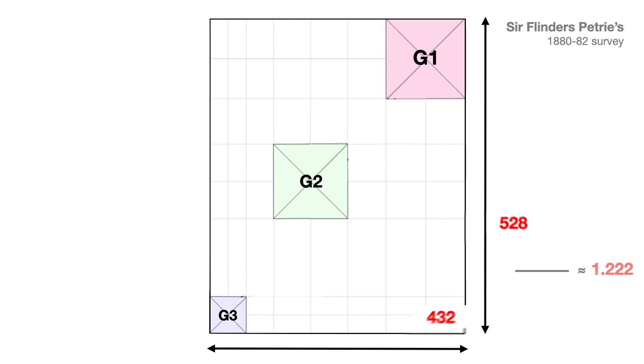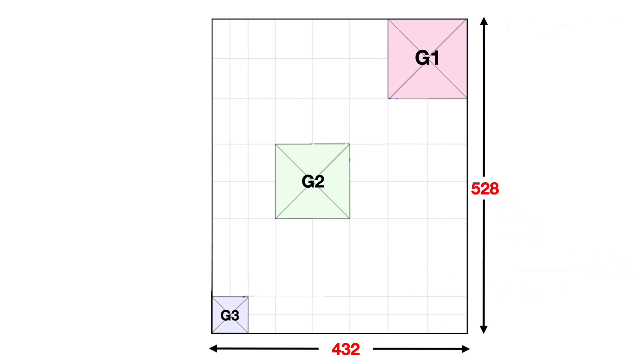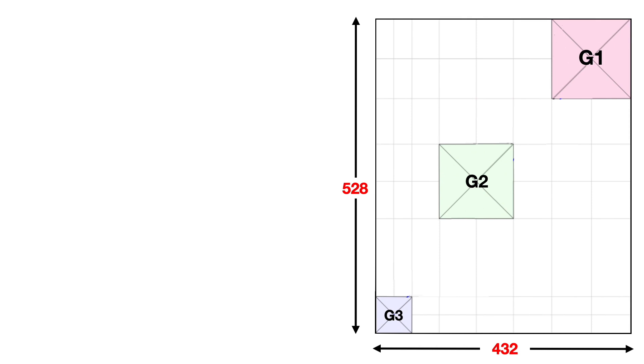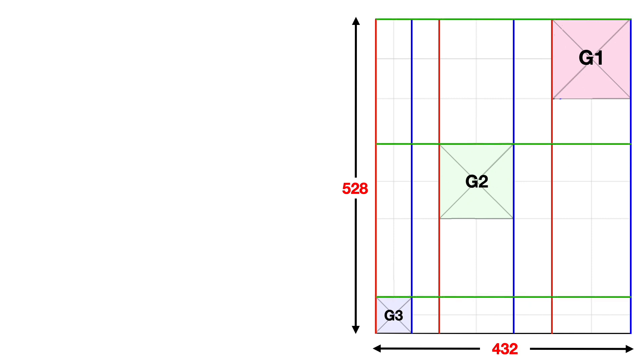As promised, you're about to witness something truly amazing. We're drawing red lines to mark the west bases of Minkori, Khafre, and Khufu, blue lines to mark their east bases, green to mark the north bases, and orange to mark the south bases.